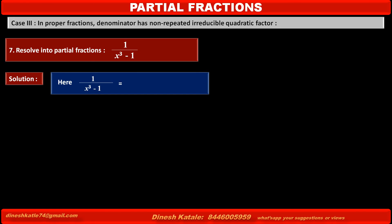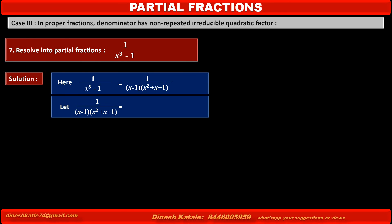Here the given fraction is 1 upon x cube minus 1, where the denominator x cube minus 1 can be factorized. We can write this fraction as 1 upon (x minus 1) into (x squared plus x plus 1). Let the fraction 1 upon (x minus 1)(x squared plus x plus 1) be equal to A over (x minus 1) plus (Bx plus C) over (x squared plus x plus 1).